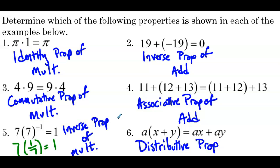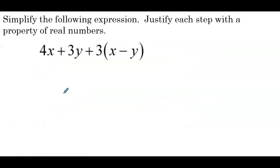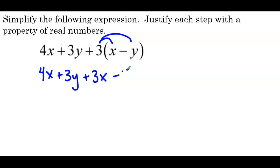So notice we didn't use all of the properties in these six examples, but they are a good way to start to discern between identity, inverse, commutative, associative, and distributive. One last example: simplify the following expression and justify each step with a property of real numbers. We're going to be really tedious here — every little thing we do, we're going to have to justify. The expression is 4x plus 3y plus 3 times the quantity of x minus y. The first thing to do is to take the 3 and distribute it, giving us 4x plus 3y plus 3x minus 3y. The justification is the distributive property.